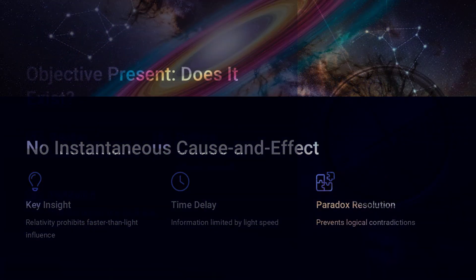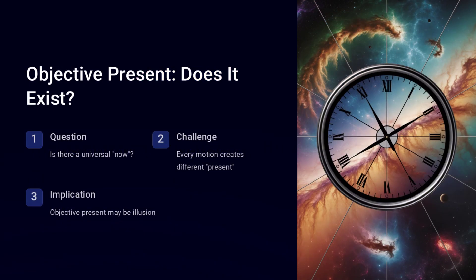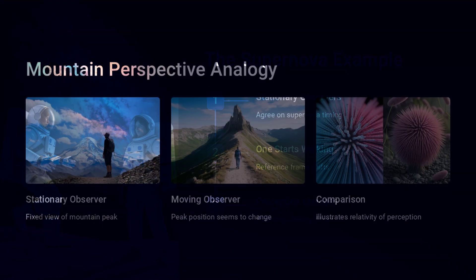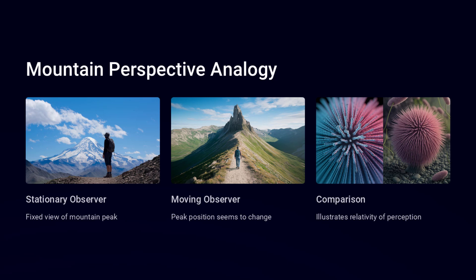Perhaps even in the Andromeda galaxy, over 2.5 million light years away. This is the essence of the Andromeda paradox, a mind-bending consequence of relativity first pointed out by physicist Roger Penrose.